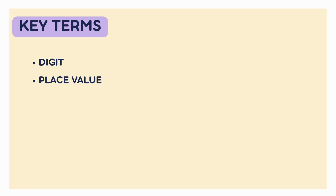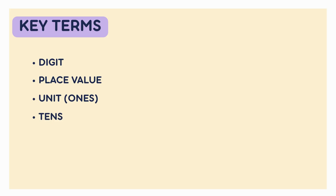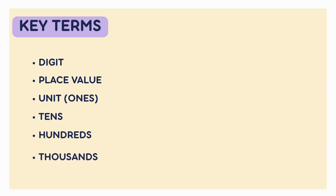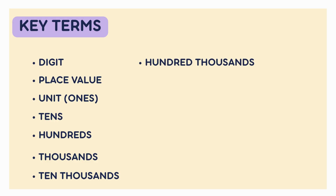Digit: any one of the ten symbols from zero to nine. Place value: the value of a digit based on where it is in the number. Unit or ones: the first place, the rightmost digit. Tens: the second place from the right. Hundreds: the third place. Thousands: the fourth place. Ten thousands: fifth place. Hundred thousands: sixth place. Millions: seventh place.